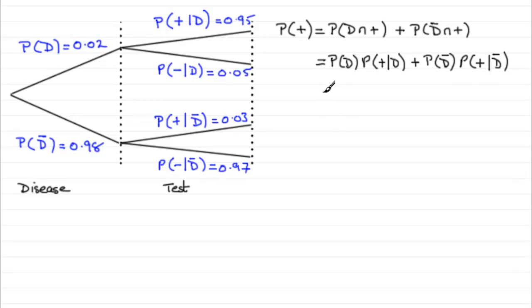Back to actually working it out then, it's going to be 0.02 multiplied by 0.95, and then plus 0.98 multiplied by 0.03.